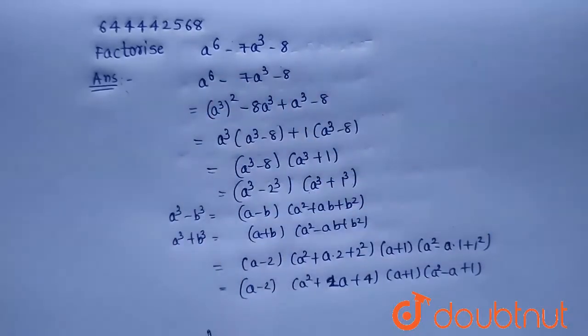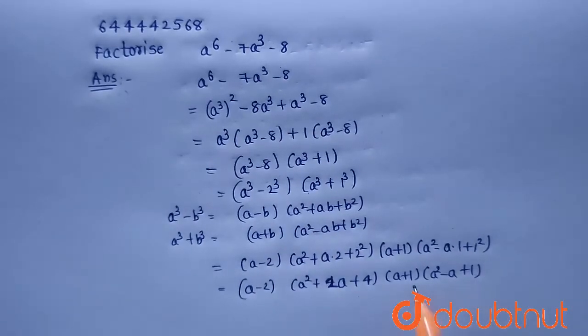So the factorization of the given expression a^6 minus 7a^3 minus 8 will be equal to (a minus 2)(a^2 plus 2a plus 4) multiplied with (a plus 1)(a^2 minus a plus 1).